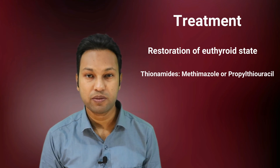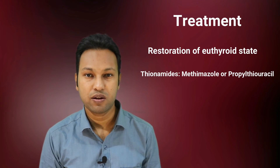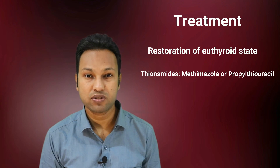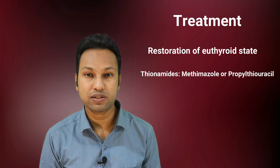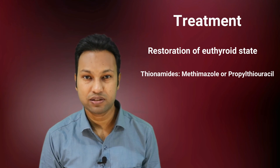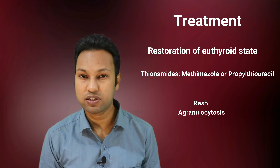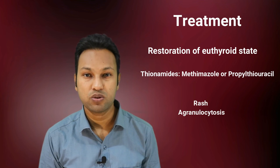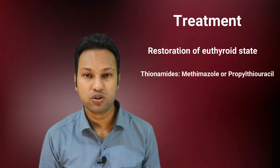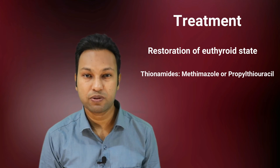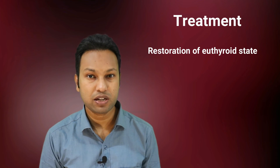To restore the euthyroid state, we can give antithyroid drugs — thionamides — that is methimazole or propylthiouracil. Methimazole is the drug of choice because propylthiouracil can cause fulminant hepatitis, but propylthiouracil is used in patients with allergy to methimazole. Both can cause rash. Another side effect is agranulocytosis, which can give rise to sore throat and fever, so patients should be warned to stop the medication and contact their doctor if they experience these symptoms.